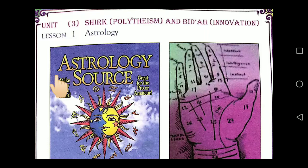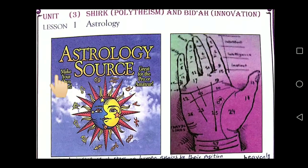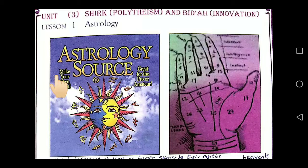Today we will start our new unit, unit number three, lesson number one. The unit is called 'Shirk' and all the lessons of this unit will relate to shirk and the oneness of Allah Almighty. Today's lesson is about astrology.